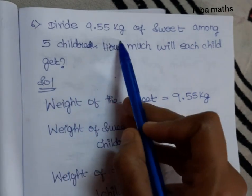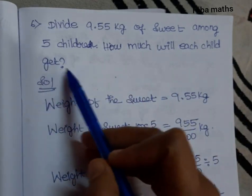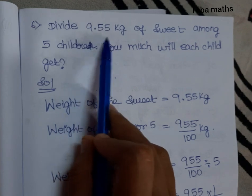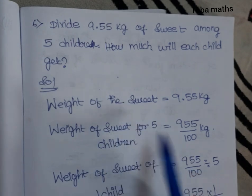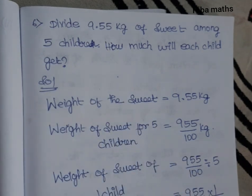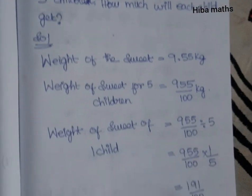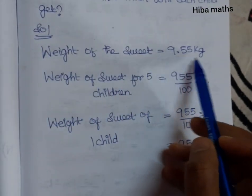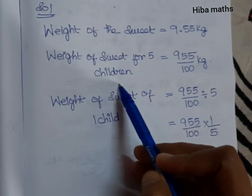Divide 9.55 kg of sweets among 5 children. How much will each child get? We have 9.55 kg of sweets to be divided among 5 children. Weight of sweets is 9.55 kg for 5 children.